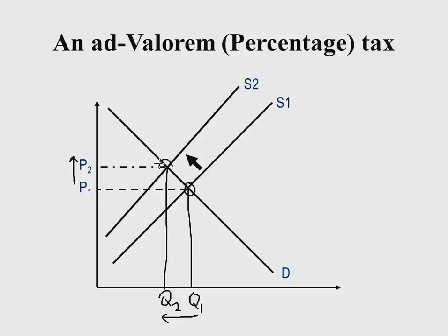The movement and effect are similar for both tax types, but the actual impact is different. For a specific tax, regardless of the volume or type of item you are getting, you will pay the same amount. For an ad valorem tax, the amount you pay will depend on the price of the item.